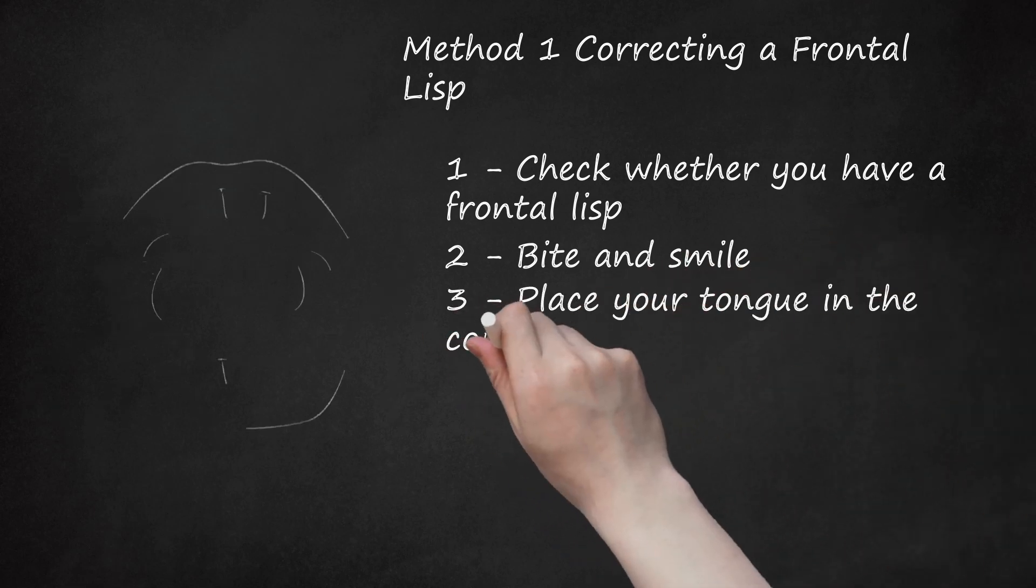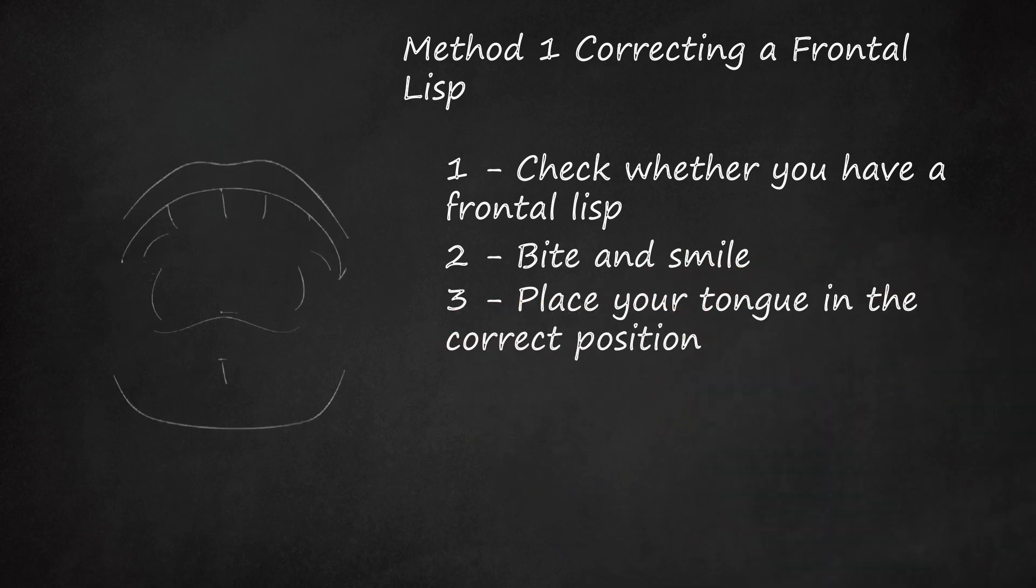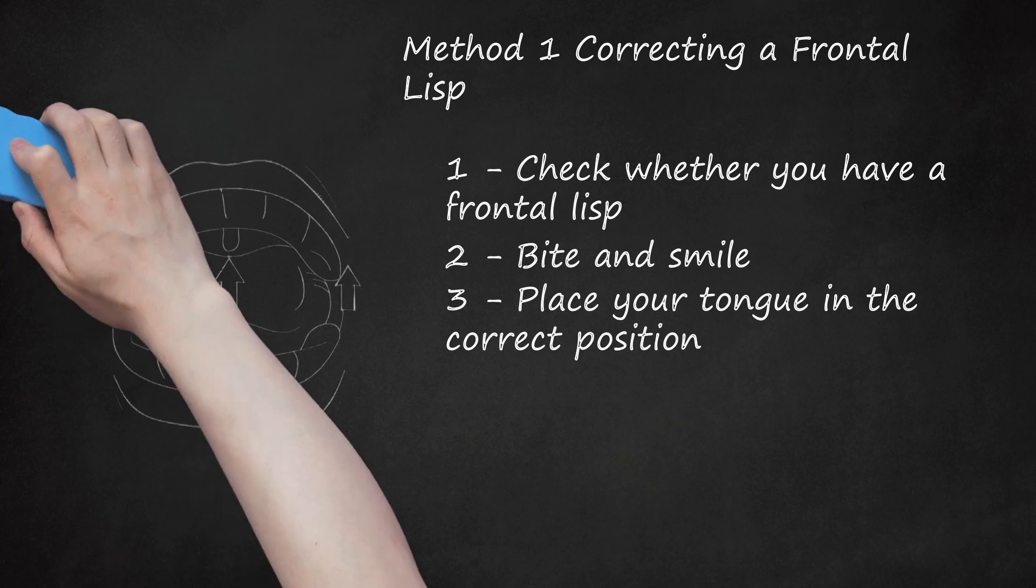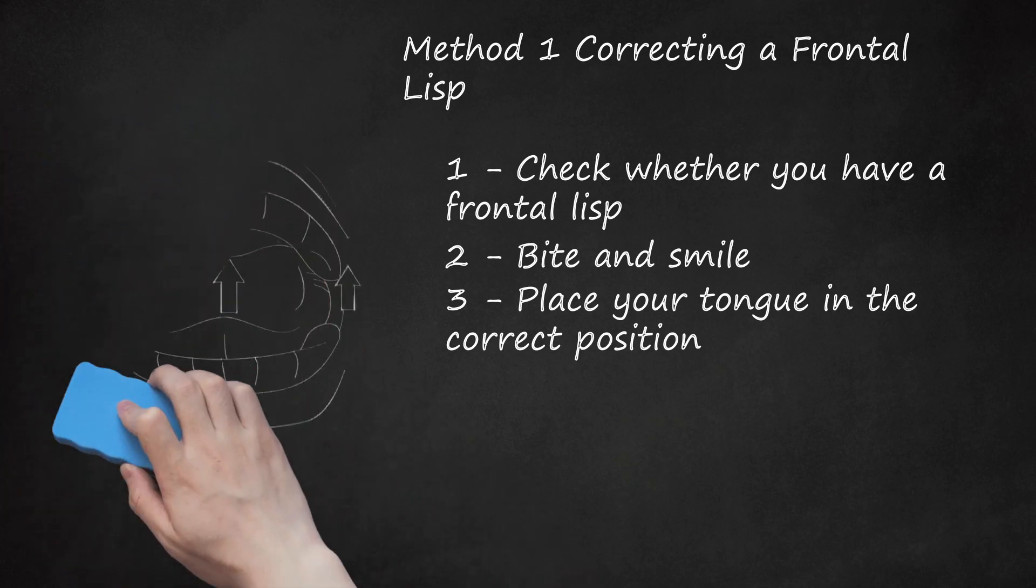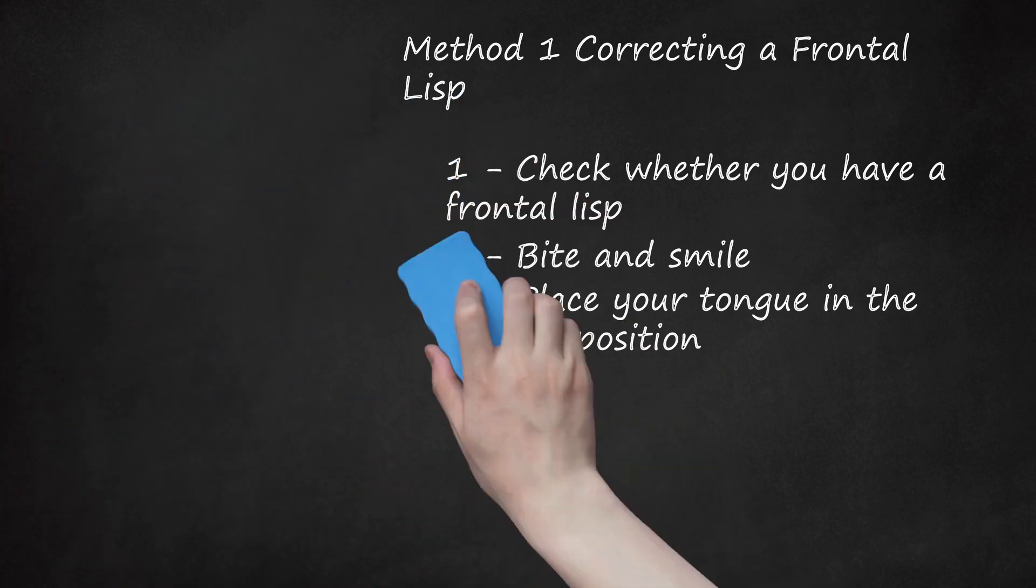Place your tongue in the correct position. Raise the sides of your tongue so they touch your upper teeth on the sides of your mouth. Bring the tip of your tongue up near the upper front of your mouth, but do not touch it against your teeth. This should form a groove down the center of your tongue, allowing air to flow. It may help to look in a mirror while trying to adopt this position.